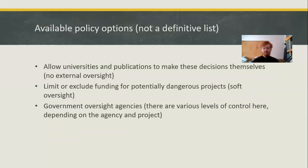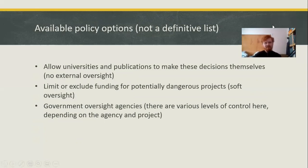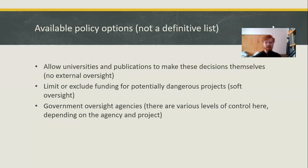What are our available policy options? This is not a definitive list. You could allow universities and publications to make the decision themselves, in which case you have no external oversight — you just trust that the people in charge of the scientific enterprise will act morally. If folks are truly educated in ethics, maybe that's a reasonable assumption, and at least they won't be beholden to whoever is presently in power. You could also limit or exclude funding for potentially dangerous projects — soft oversight — making it more difficult to do dangerous research.